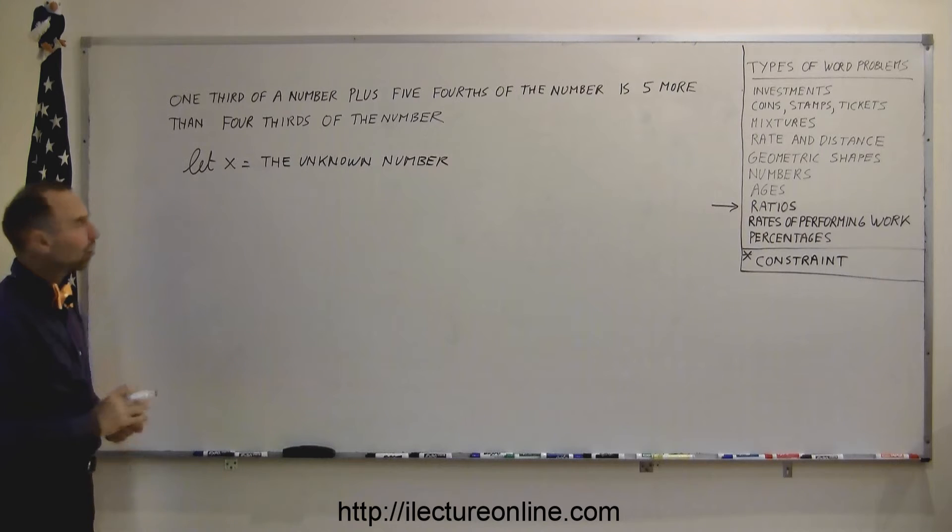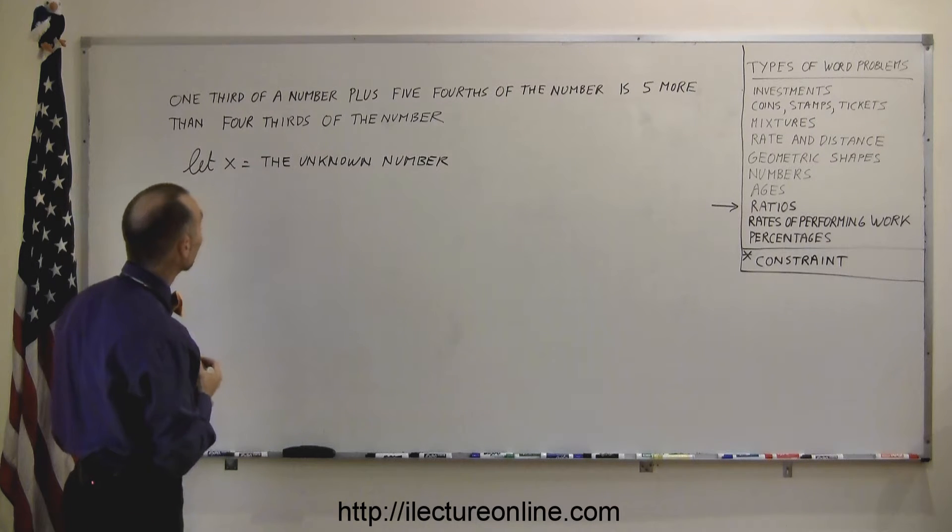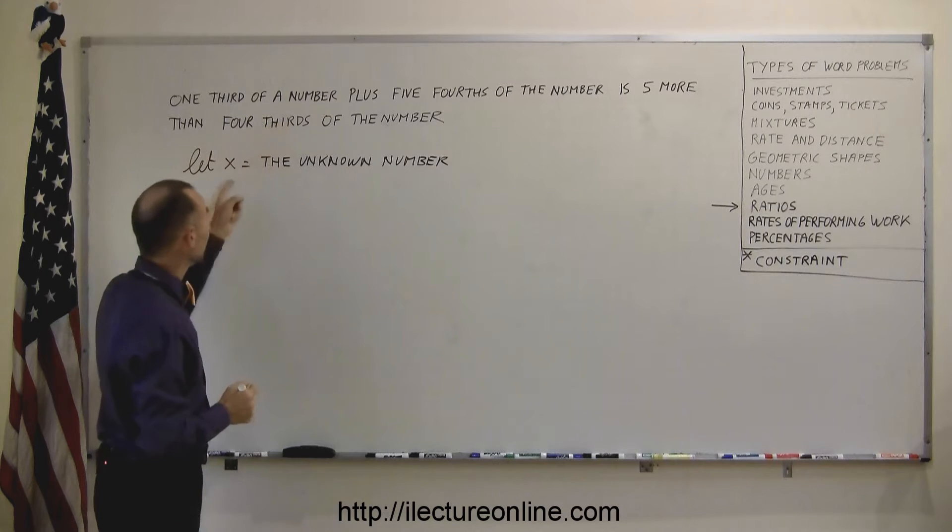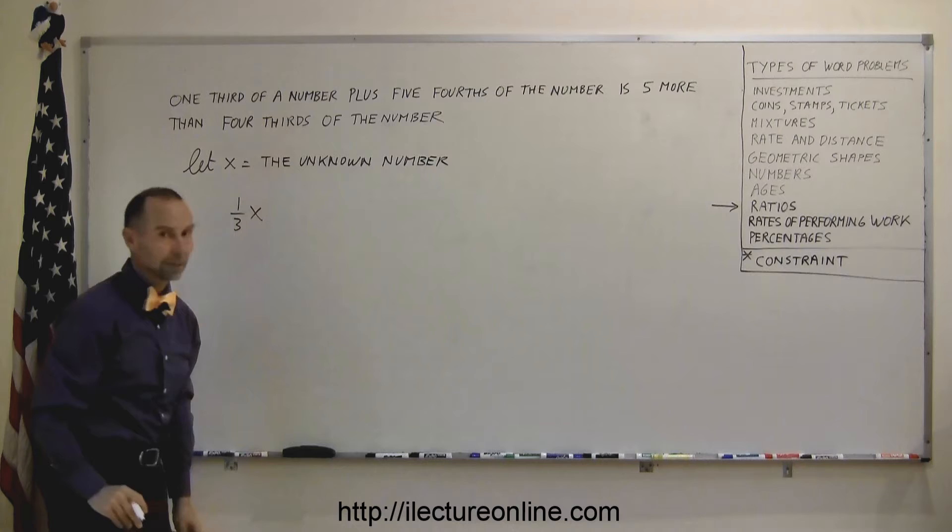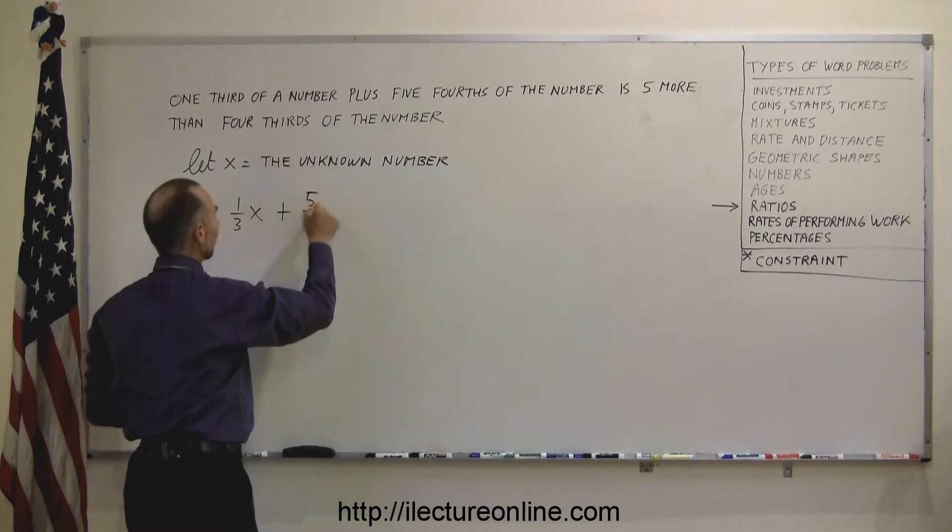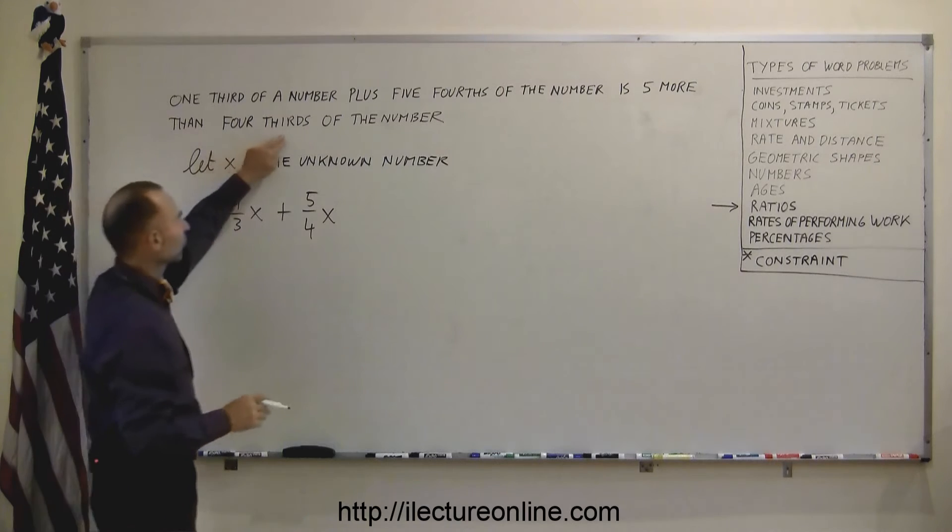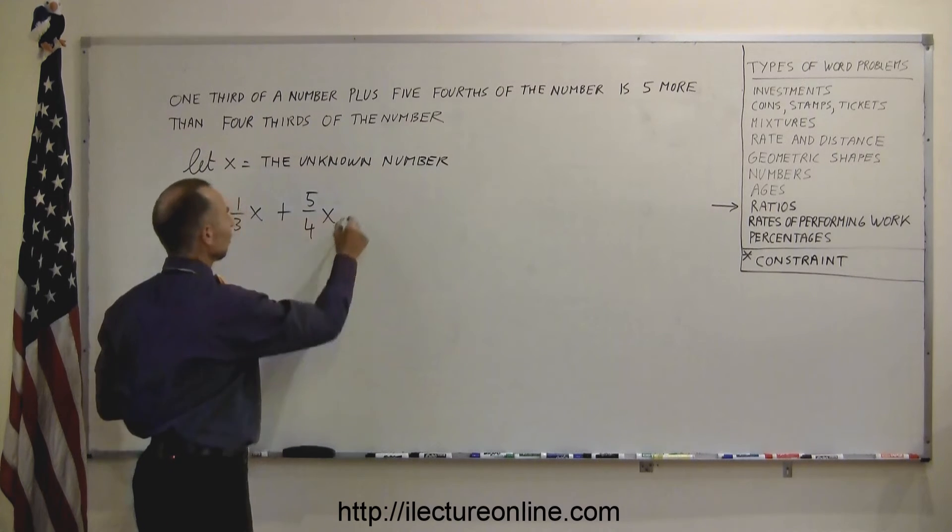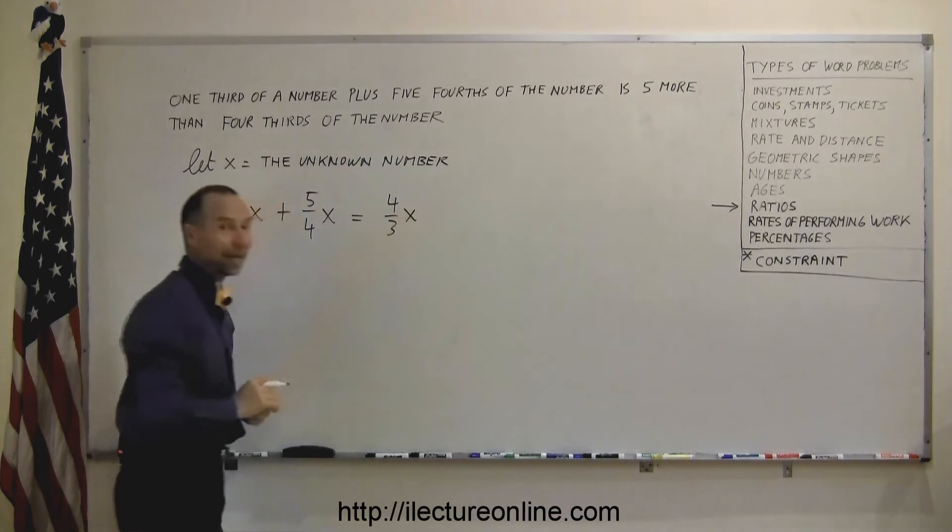So now we have to come up with an equation, a constraint, something based upon what's given to us that will help us set up an algebraic equation that we can solve for x. So it says one-third of a number, since the unknown number is x, so let's say one-third x. So one-third x represents one-third of the number, plus five-fourths of the number, so plus five-fourths of x, x being the unknown number, is five more than four-thirds of the number. So if I take four-thirds of the number and add five to that, it should equal this. So this equals four-thirds of the number, the number being x, plus five.